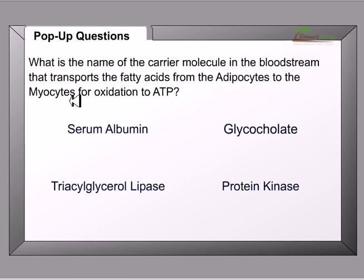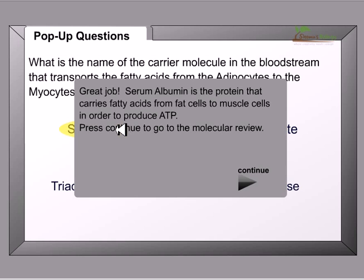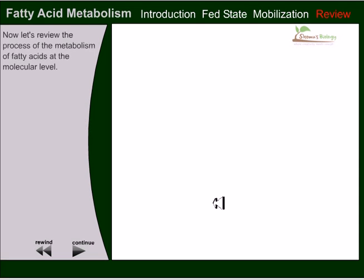There is another question: What is the name of the carrier molecule in the bloodstream that transports fatty acids from the adipocytes to the myocytes for oxidation to ATP? The answer is serum albumin — the protein which carries them.